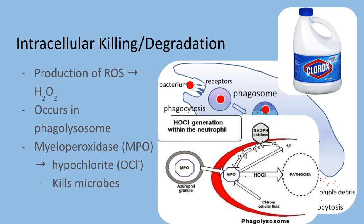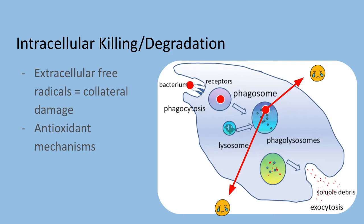Another thing that can occur is hydrogen peroxide can get converted to a hydroxyl radical, another powerful destructive agent. These oxygen-derived free radicals can bind to lipids, proteins, and nucleic acids, and those can end up killing cells as well. Unfortunately, oxygen-derived free radicals may also get released into the extracellular environment in certain situations, and that can cause tissue damage and accompanying inflammation. Fortunately, host cells have antioxidant mechanisms that can, to some degree, protect against these oxygen-free radicals.